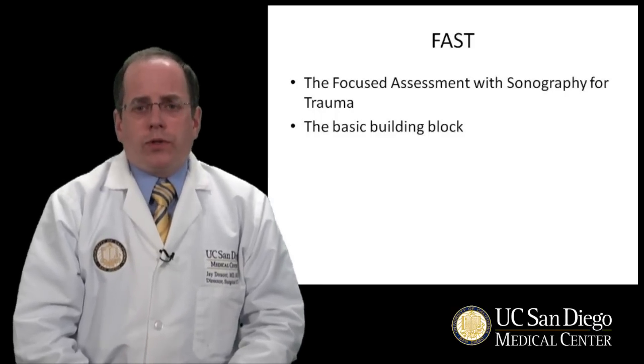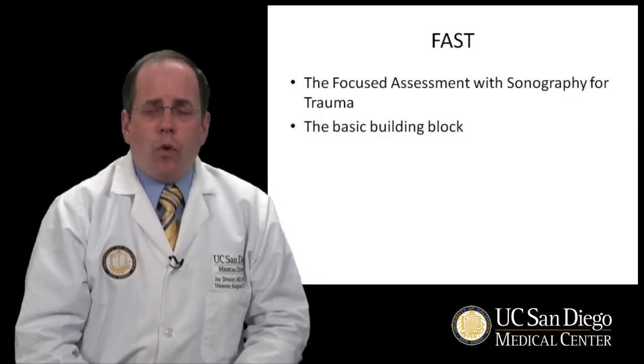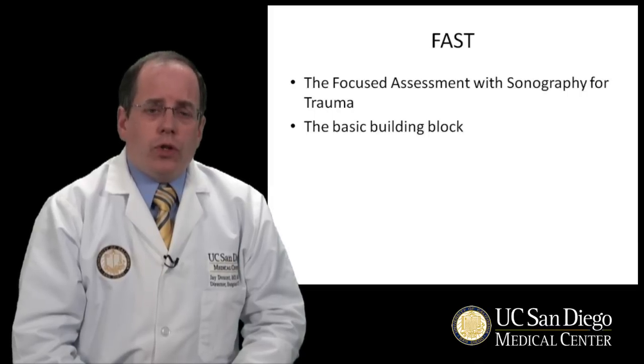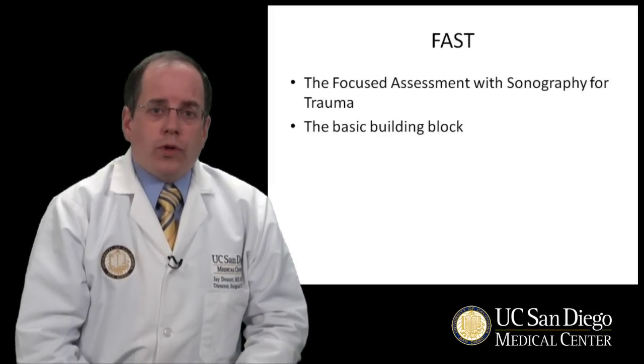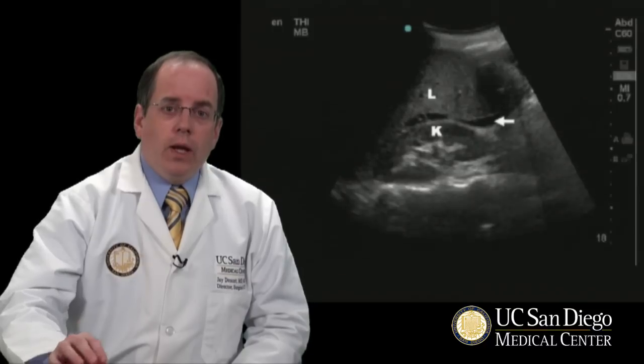FAST, or focused assessment with sonography in trauma, is the basic building block for training residents and surgeons for the use of ultrasound in the abdomen. It's a technique that should be learned by residents during the course of their general surgery residency. Here's an example of a FAST exam looking at Morrison's pouch, which is usually the first window examined. The L stands for liver and the K is for kidney. Between the liver and the kidney is Morrison's pouch, and normally you'll see the liver sliding over the kidney without any fluid present. However, in this ultrasound image, you'll see that there is in fact fluid sitting between the liver and the kidney. This would be considered a positive FAST exam for trauma.